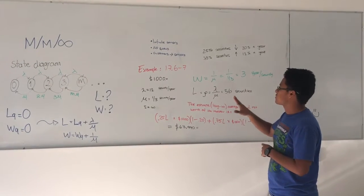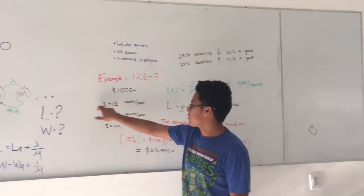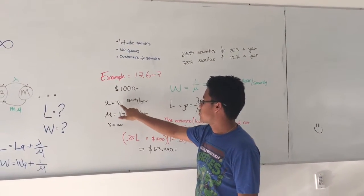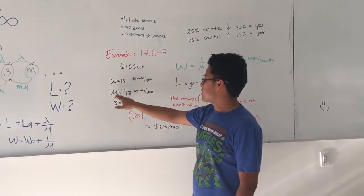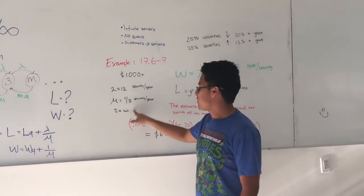Well, the things we know is the average arrival rate of the security per year is 12. And the service rate that is one-third of security per year. We know that servers are infinite.